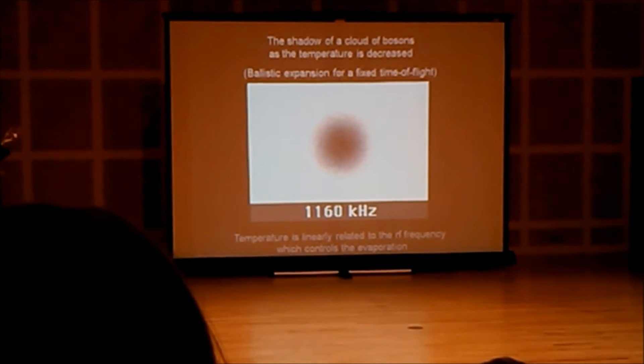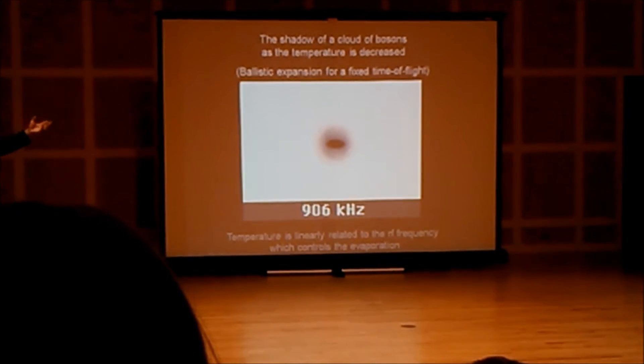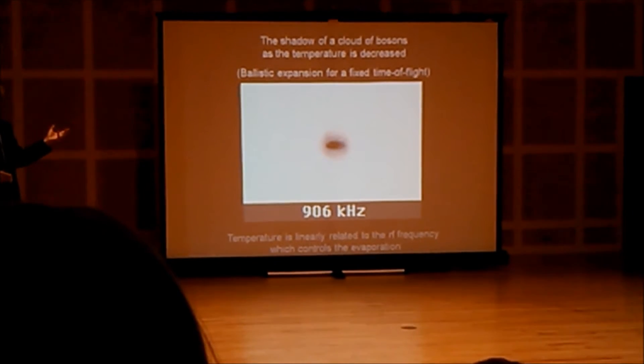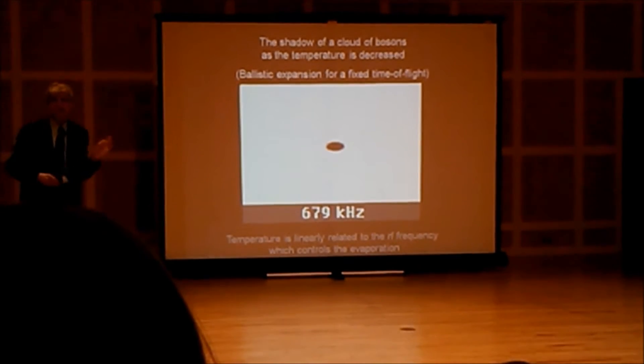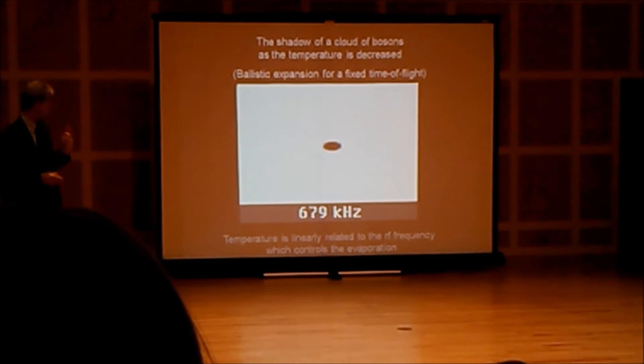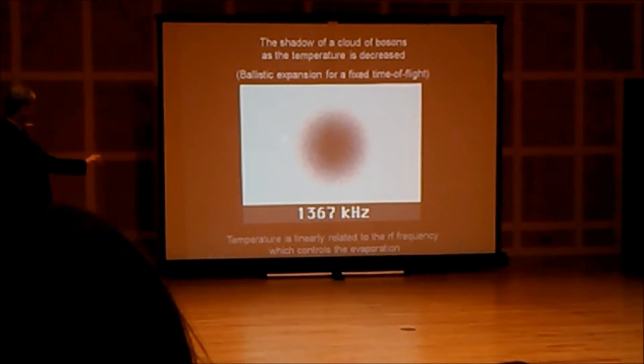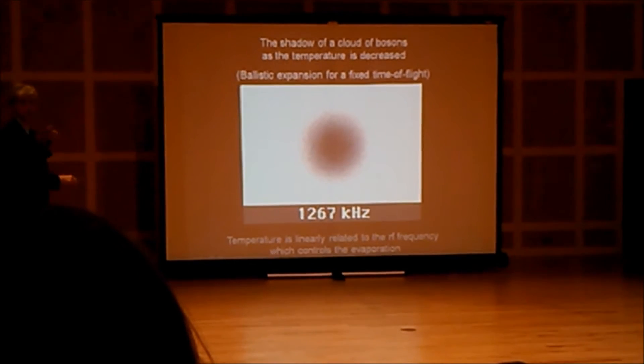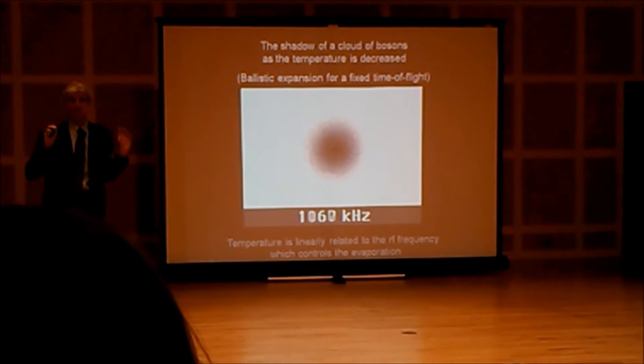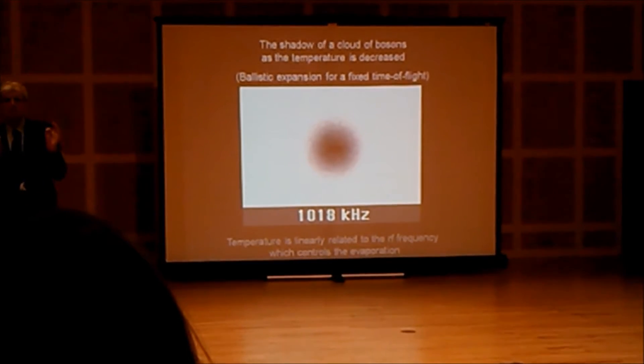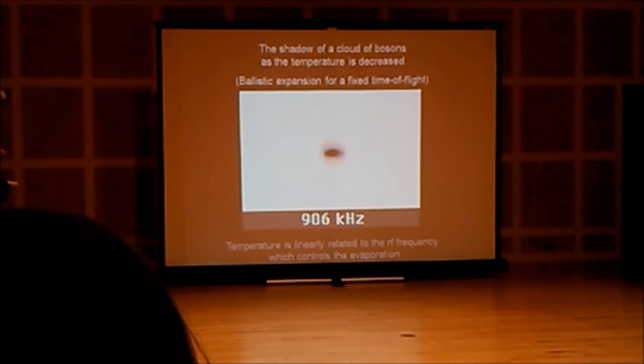But it's not just getting colder, suddenly there is a change in the characteristic. It looks like it's a cherry which has a pit inside. This pit inside, this is the Bose-Einstein condensate, these are the blue guys which march in lockstep. There is something else you should see. This shadow is perfectly circular, but what suddenly happens inside is elliptic. So something is going on here, something is happening which shows that the character, the properties of the gas has changed.